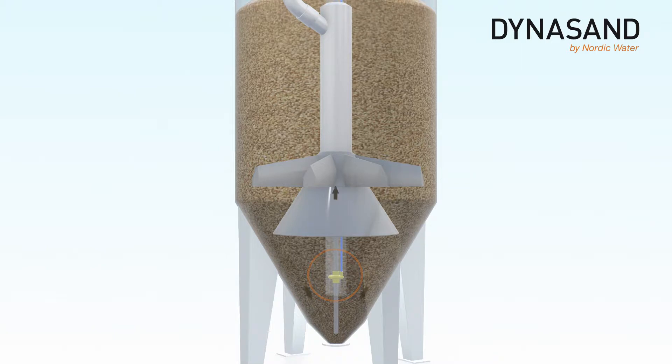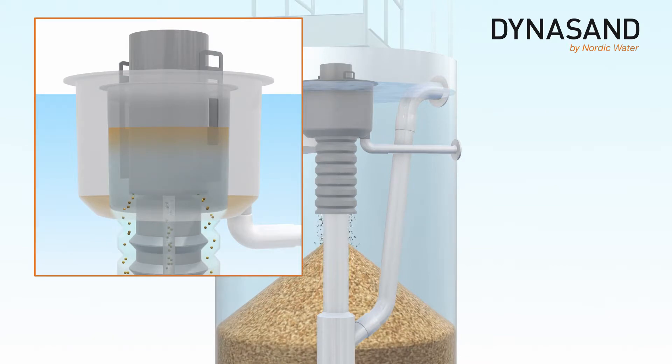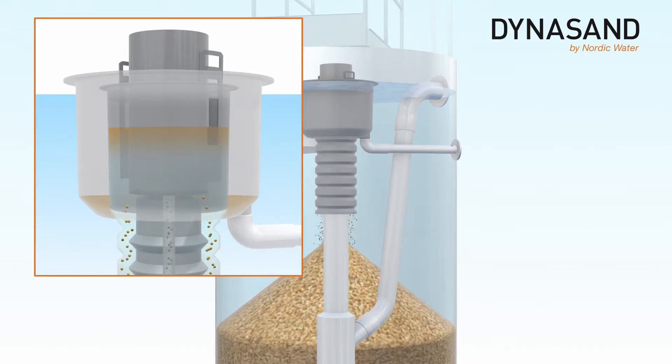The air lift pump lifts filter media containing the water impurities from the bottom of the Dynasand filter and releases it into the sand washer.